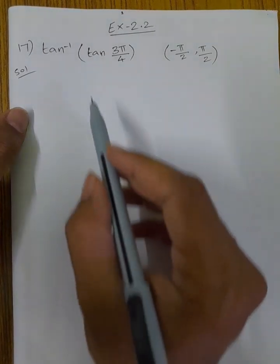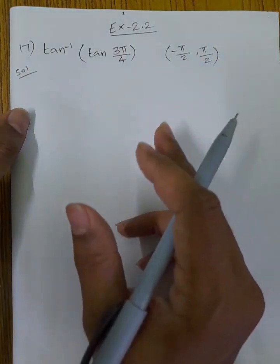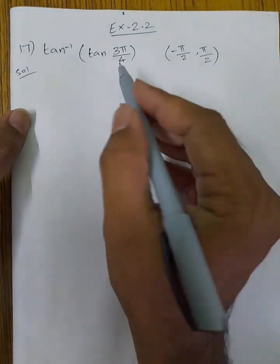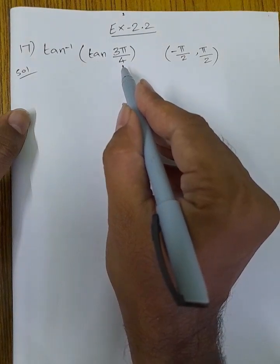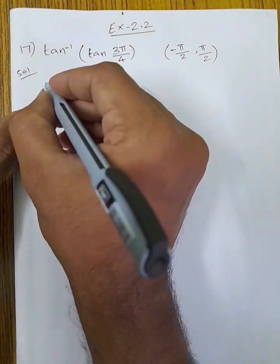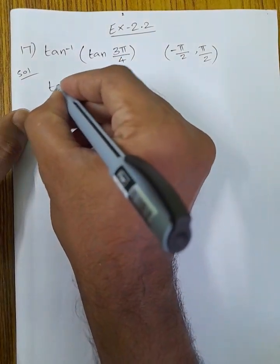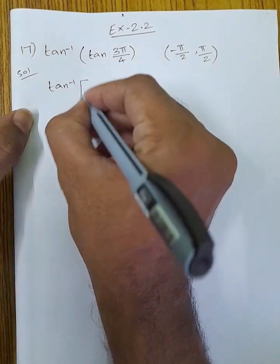Since we have 35π/4, which is outside the range, we will split it. If we split it, we will split the denominator value to simplify the expression.